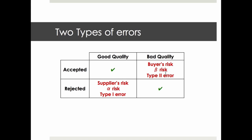And it's actually two very different types of risks. If it's bad quality and we accept it, that's the buyer's risk — often called beta risk, or what statisticians would call a type 2 error. And if it's good quality and we reject it, that's also a risk — the supplier's risk, or alpha risk. A good sampling plan tries to reduce the proportion of these errors.